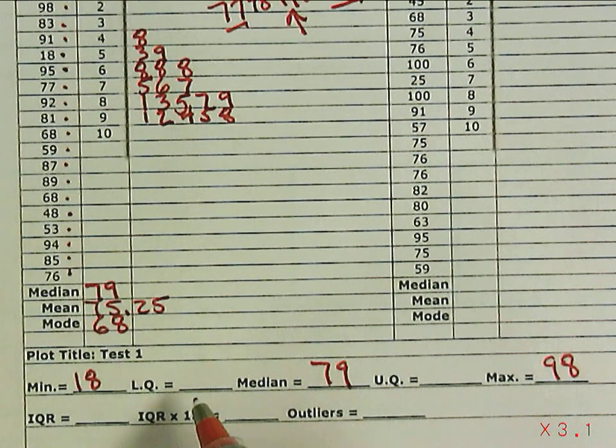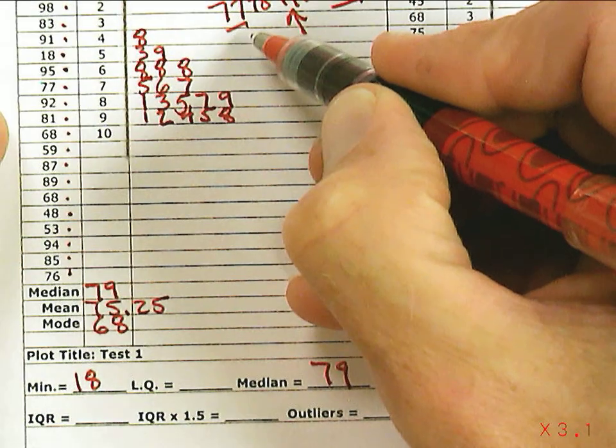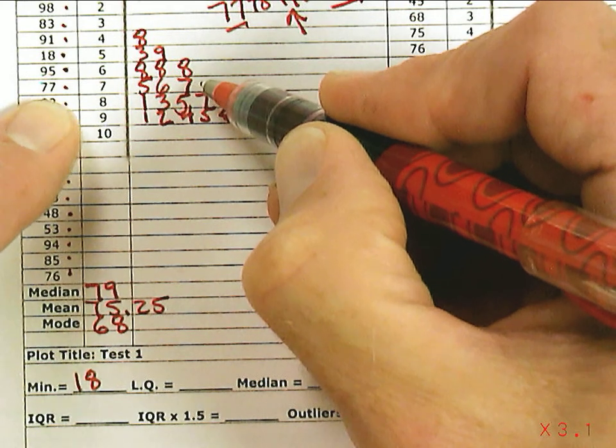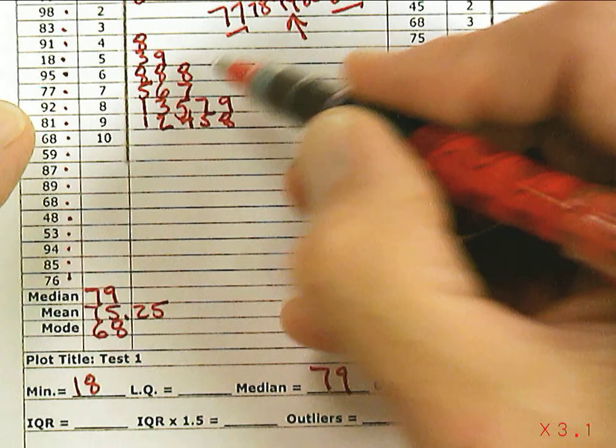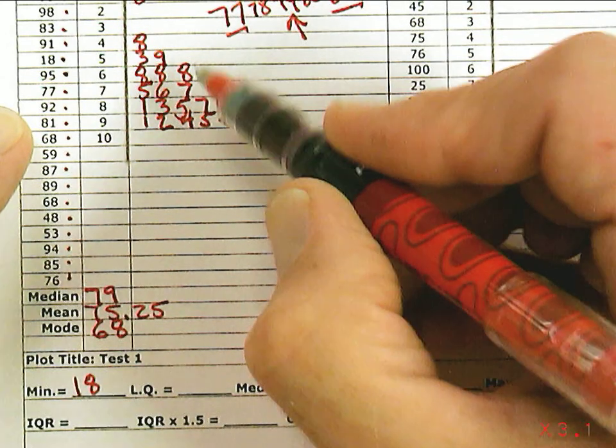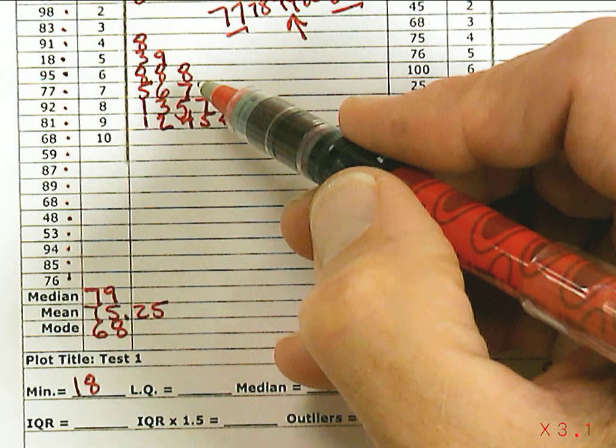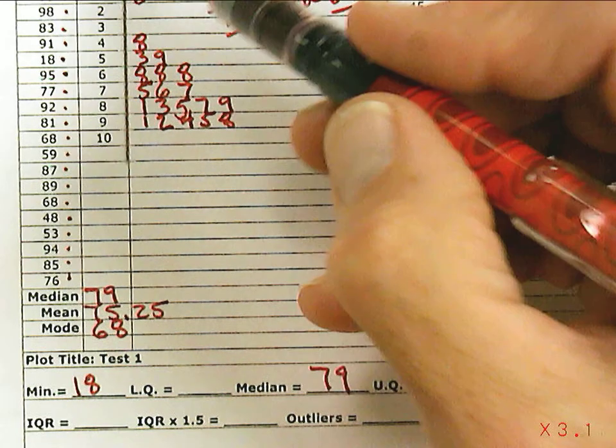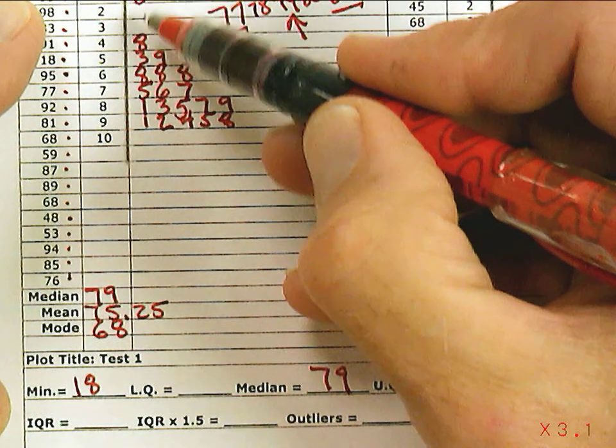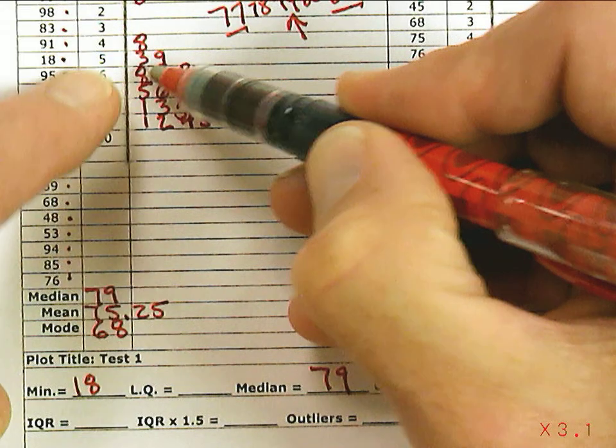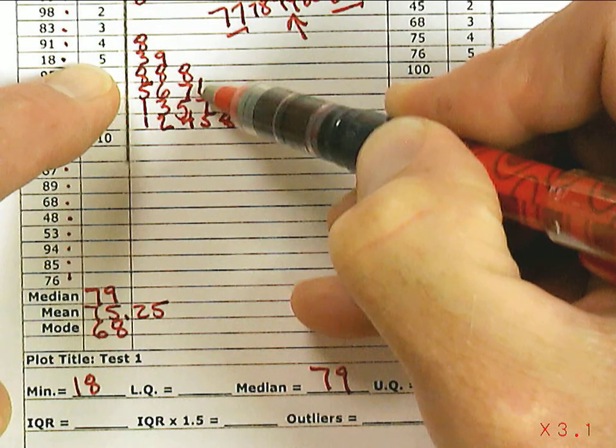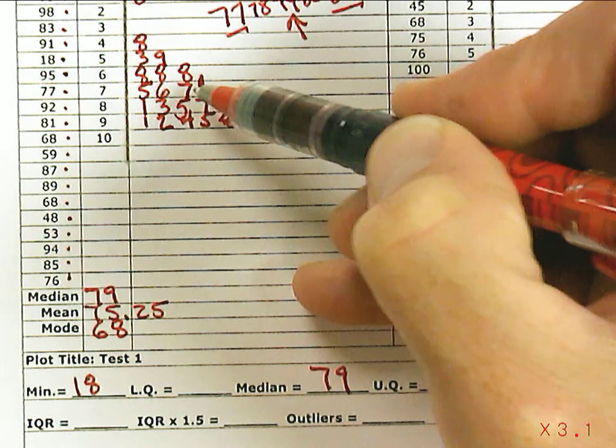To find the lower quartile, remember I said that 77 was the top of the bottom half of the data set, and 81 is the bottom of the top half. So 81 and 77 tell you where the middle is. Now we want to find the middle of the bottom and the middle of the top. There's 10 numbers in the bottom half.